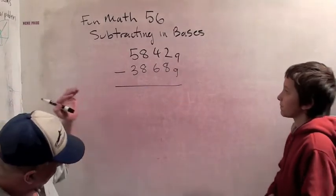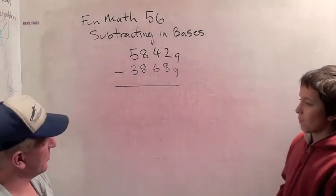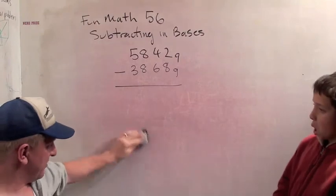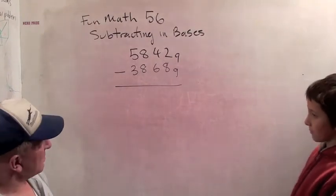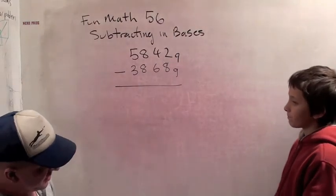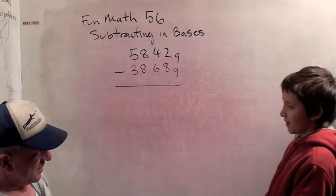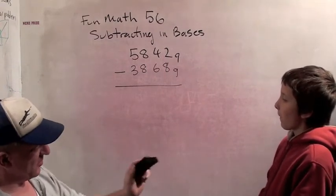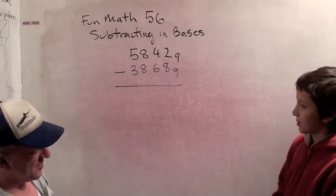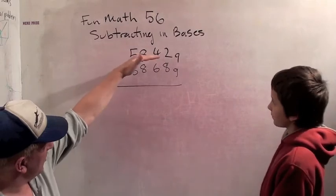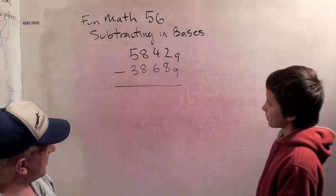We're doing this video before we talked about subtracting, so this is going to be kind of half teaching. This morning we talked about adding in bases. What did you do to add in bases? Just added. You learned your lesson. So what do you think you do to subtract in bases? You just subtract. Alright. So 5842 base 9 minus 3868 base 9. Go.